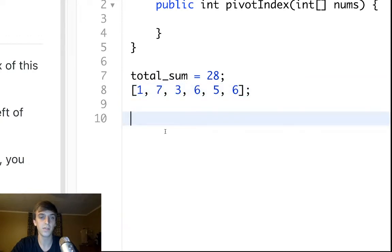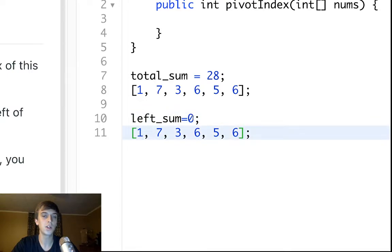Let's loop through it again. Now we already have the sum is twenty-eight. Let's keep a left sum. Now left sum is zero. Let's check the current element. If total sum minus left sum minus current element is equal to left sum, that will give us the answer.